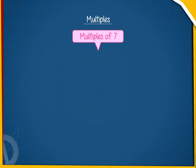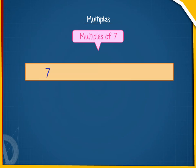So the multiples of seven are seven, fourteen, twenty-one, twenty-eight, thirty-five, forty-two, etc.